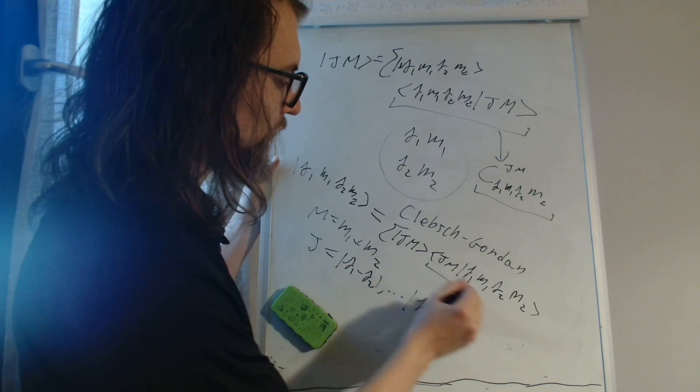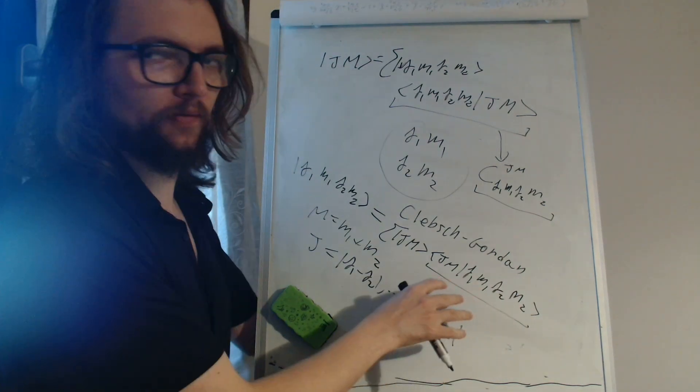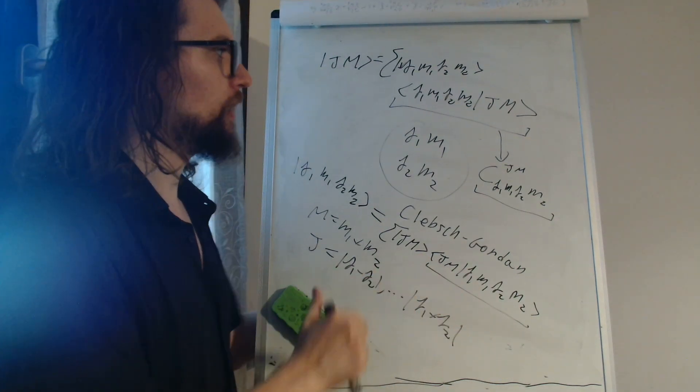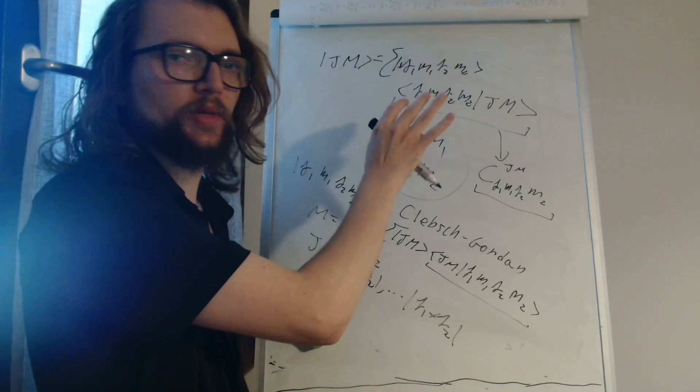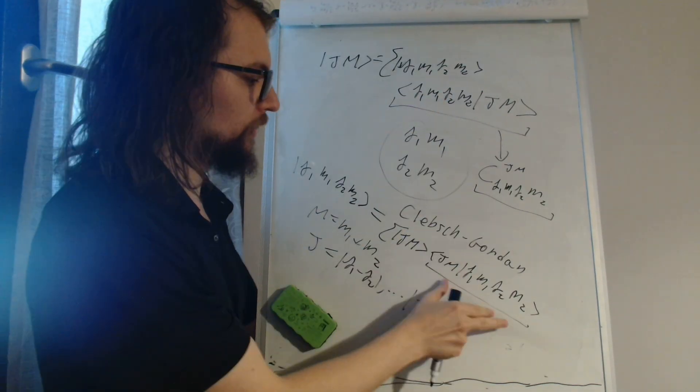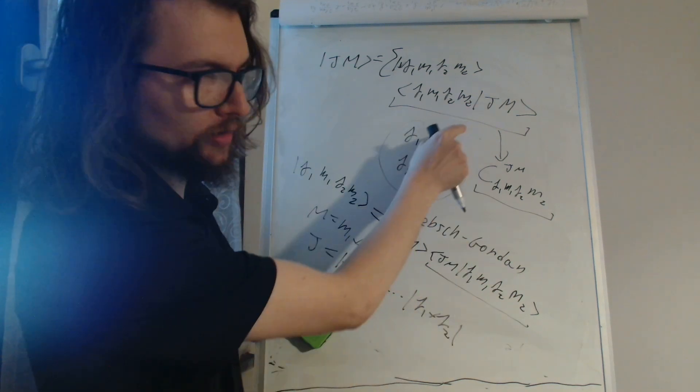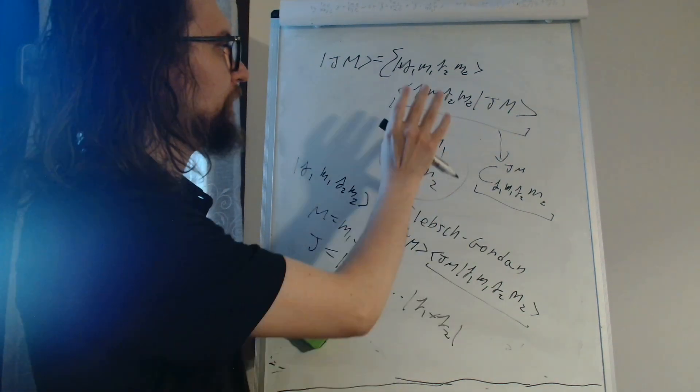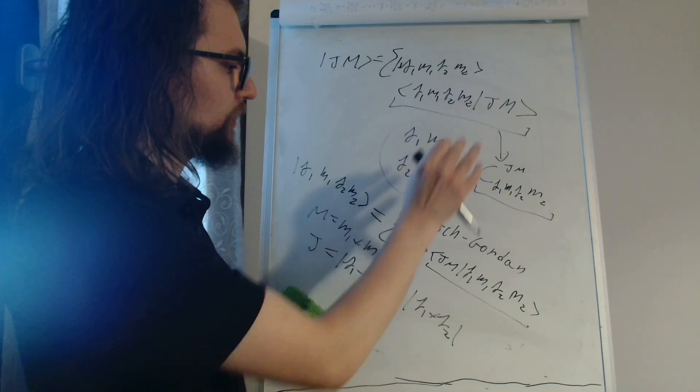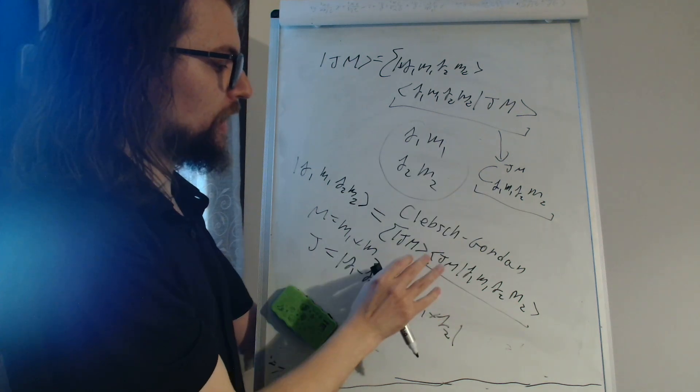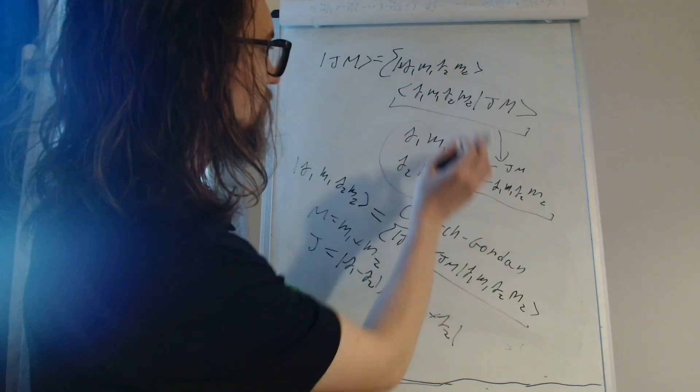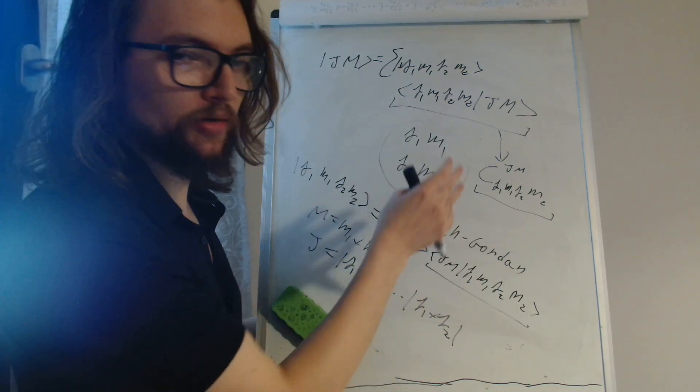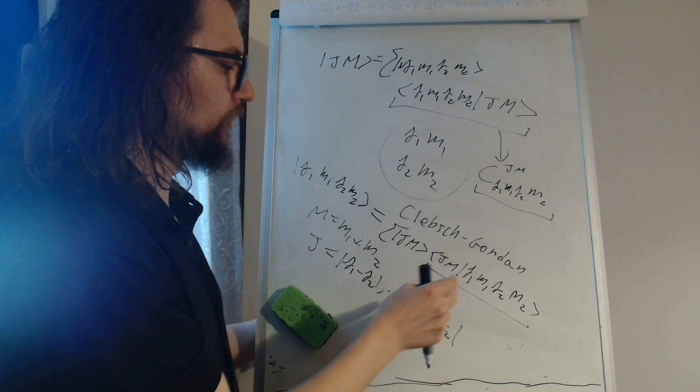The coefficients here would be the inverse Clebsch-Gordan coefficients, but we have said that these are chosen to be real. This is exactly the complex conjugate of the forward coefficients, because here we have bra1 ket2, and here we have bra2 ket1. So this is the complex conjugate, and since they are real numbers, they are exactly the same.